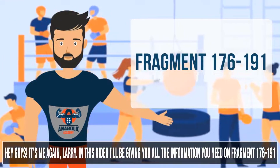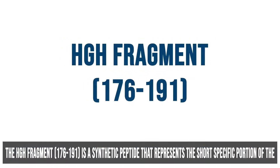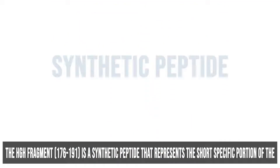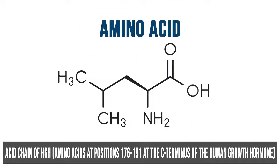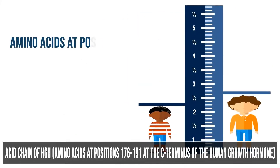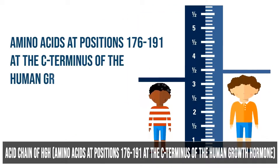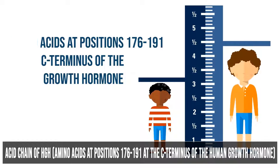The HGH Fragment 176-191 is a synthetic peptide that represents the short specific portion of the amino acid chain of HGH — amino acids at positions 176 to 191 at the C-terminus of the human growth hormone.